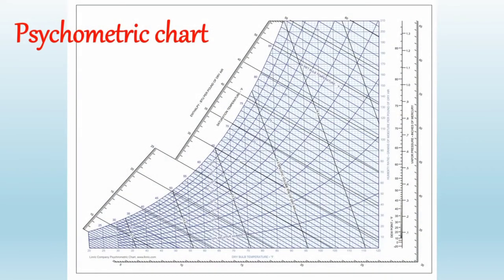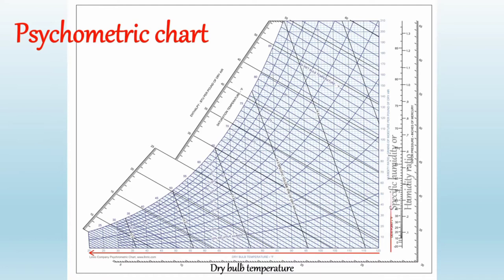So this is a psychometric chart. In a psychometric chart, dry bulb temperature is taken as the abscissa — that means on the x-axis — and specific humidity or humidity ratio, that is moisture content, is on the y-axis. The saturation curve is drawn by plotting the various saturation points at corresponding dry bulb temperatures. The saturation curve represents 100% relative humidity at various dry bulb temperatures, and it also represents the wet bulb and dew point temperatures.